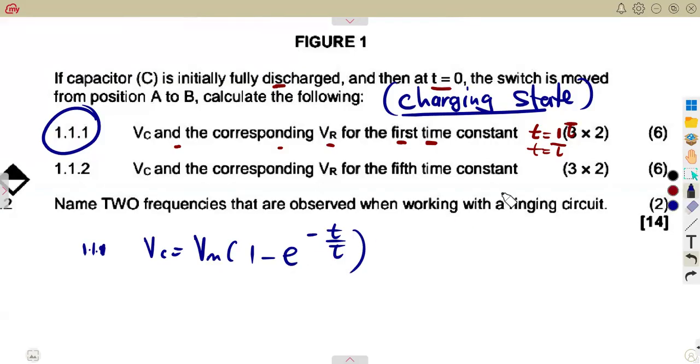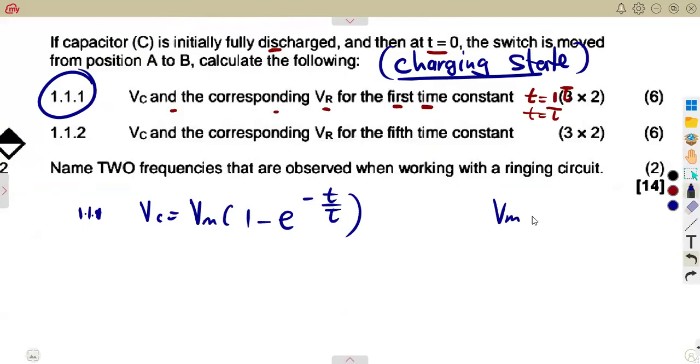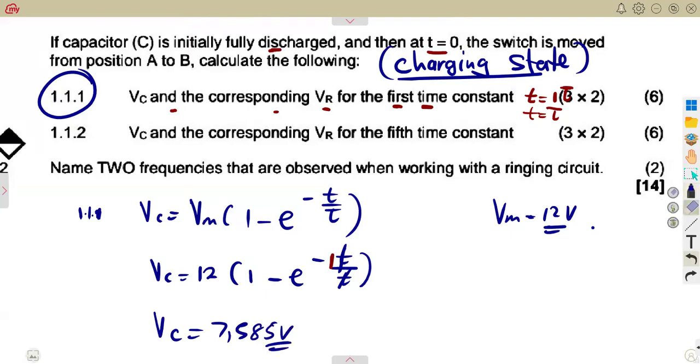We are going to substitute with the condition that you are given at one time constant. VM, remember from our diagram, our VM is VDC which is 12. It was just a matter of substituting your VM. That is 12 into 1 minus e to the exponent of minus t over τ. Remember, t and τ are equal, so in place of τ you can write it as t. They will just cancel and give us a minus 1. From this, you are going to calculate your VC which is 7.585 volts.